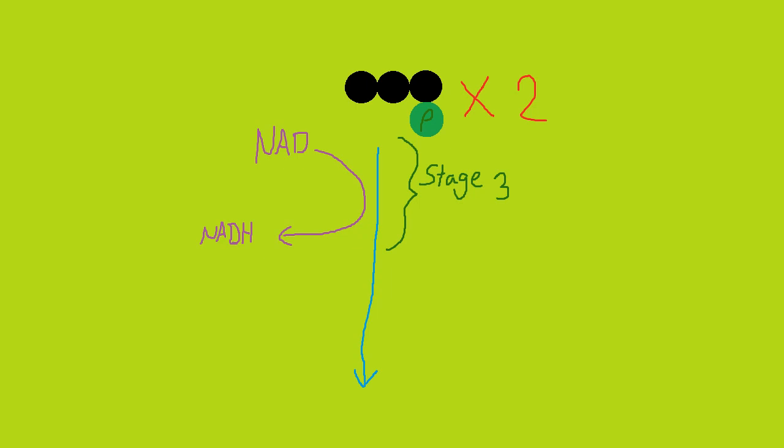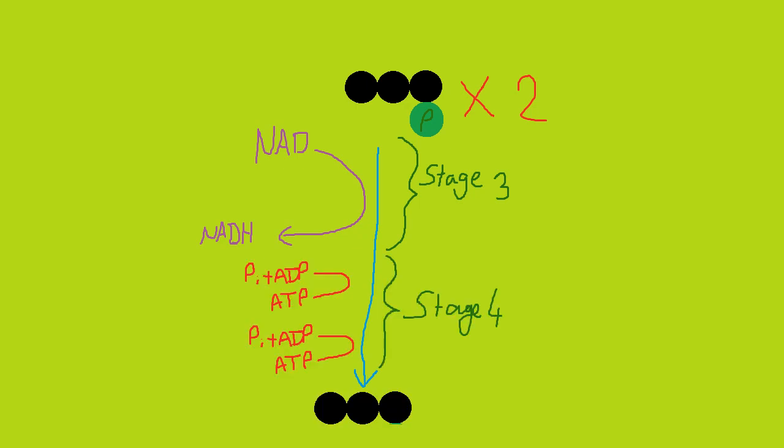The NAD accepts a hydrogen ion from the triose phosphate molecule to produce NADH, or reduced NAD. The fourth stage of glycolysis is the production of ATP, in which the triose phosphate is converted into another three-carbon molecule called pyruvate. In this process, two molecules of ATP are regenerated from ADP, and the inorganic phosphate comes from the triose phosphate molecule.